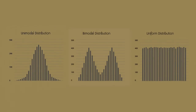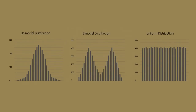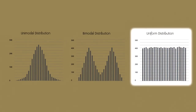The second distribution is bimodal, with two modes roughly at 10 and 20, around which the observations are concentrated. The third distribution is flat or uniform — it has no modes, and instead the observations are roughly uniformly distributed among the different values.